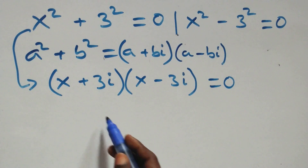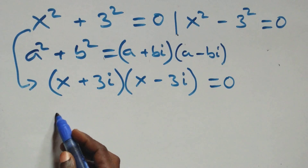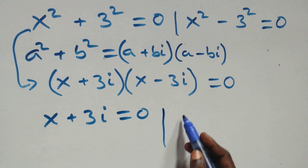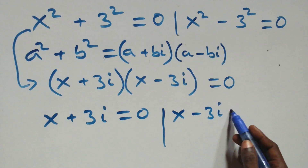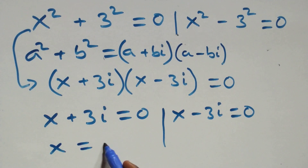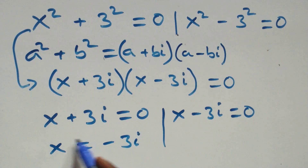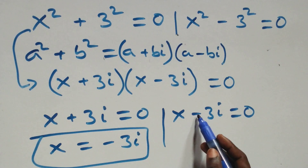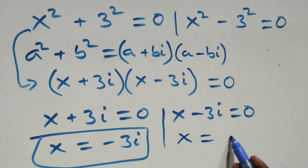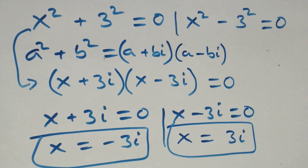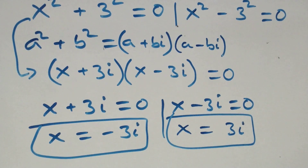Here we again have two possible cases. The first: x plus 3i equals zero, giving x equals −3i, which is a complex solution. On the other side, x minus 3i equals zero gives x equals 3i, also a complex solution. So we have two complex solutions from this case.